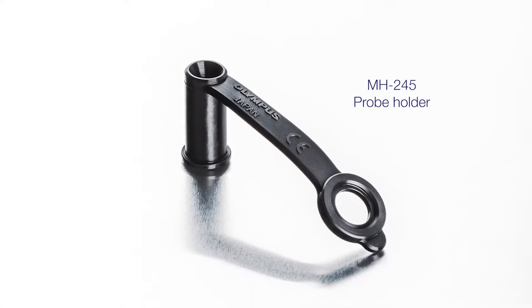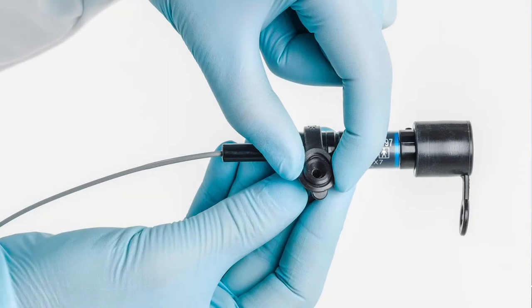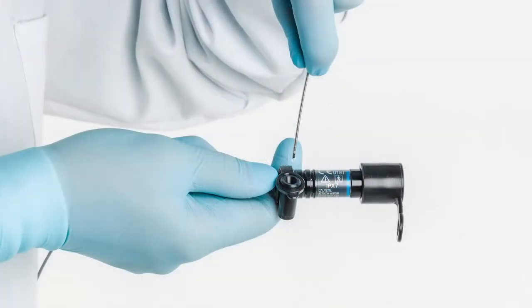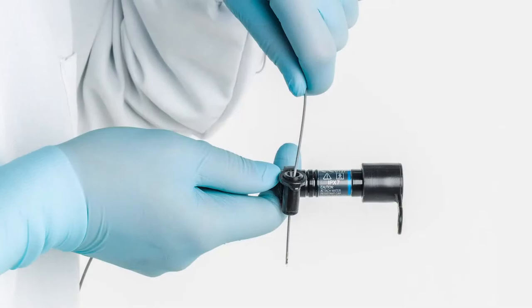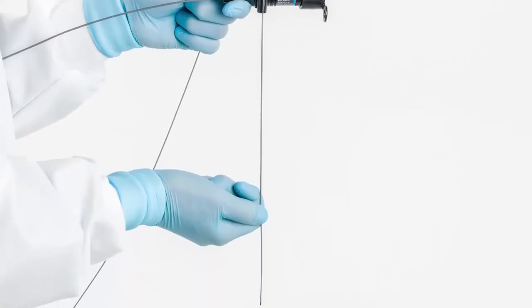Wrap the MH245 probe holder around the probe holder mounting section on the probe connector. Insert the distal end of the probe through the probe holder. There should be one big loop with the distal end hanging below.